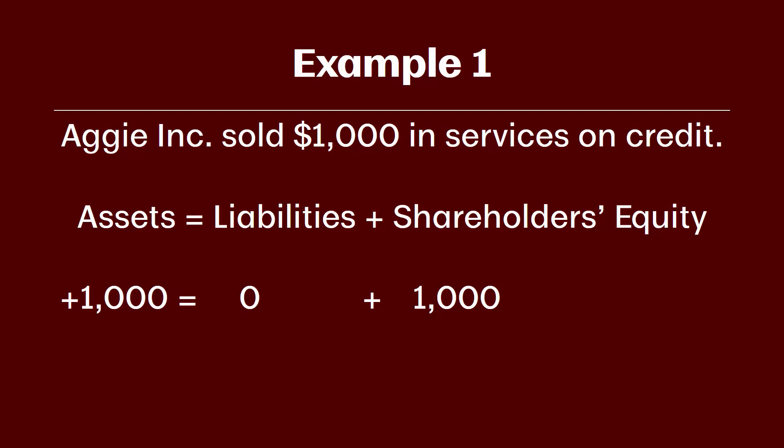The term 'on credit' means we haven't yet received cash for this sale — we're letting our customer pay us later, which means we need to record accounts receivable now. That shows the balance we're owed by our customers. We're not receiving cash yet, but that does not mean we wait to record the revenue. Revenue can be recognized as long as we expect to receive cash in the future, and it must be recognized when earned — when the good or service is provided. Since both conditions are met, we record revenue and AR instead of cash. Either way, assets increase by $1,000, balancing with the increase in shareholders' equity.